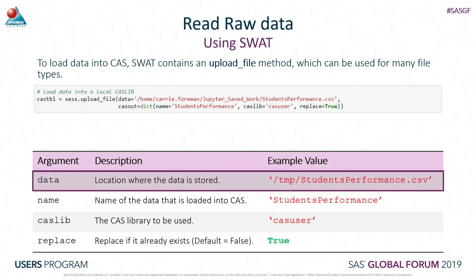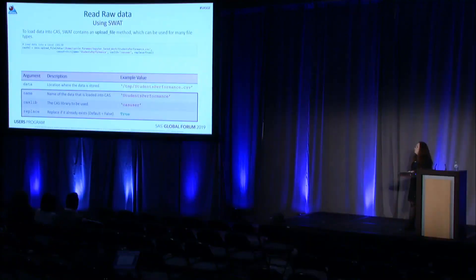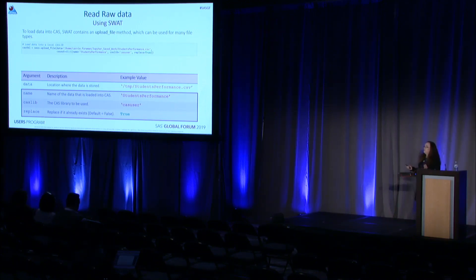Within the upload file method, there are two main arguments. Firstly, the data argument - the location where the data is stored on the SAS Viya server. And secondly, there's a CAS out argument. Within the CAS out argument, there are additional optional options which I've added as part of a dictionary statement - something any Python user would be completely familiar with. The three I've added include: name (the name of the data to load), the CAS library (I've chosen the CAS user library), and a replace option, which will replace the data if it already exists in CAS. By default, this is set to false.